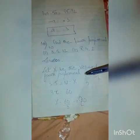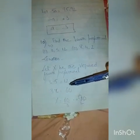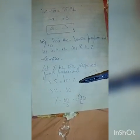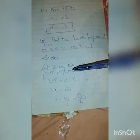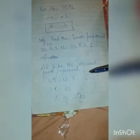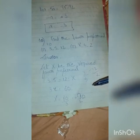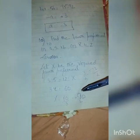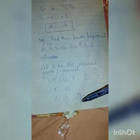Next, find the 4th proportional. We have 3, 5, 12 and X. So 3 is to 5 equals 12 is to X. We write 3 divided by 5 equals 12 divided by X, which gives 3X equals 60, so X equals 60 divided by 3, and X equals 20.